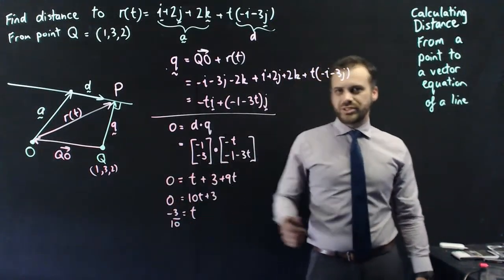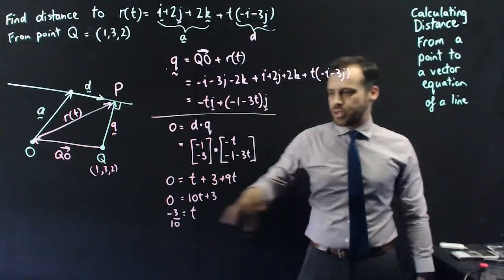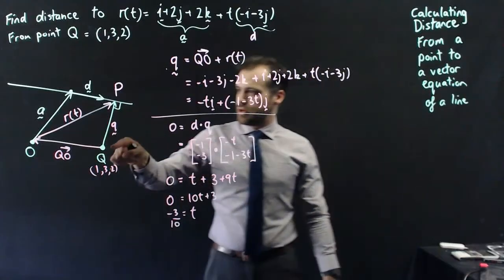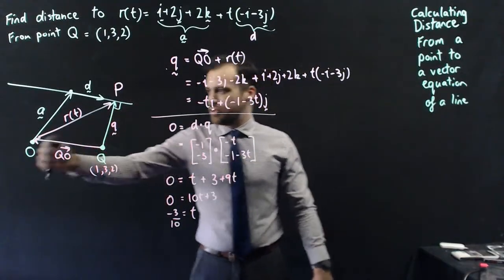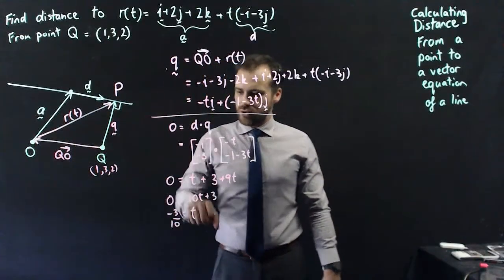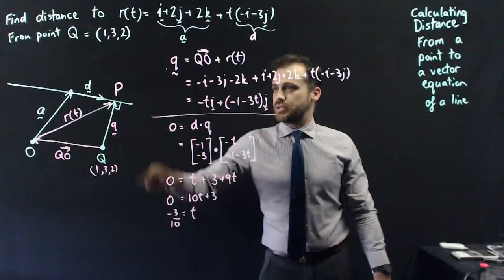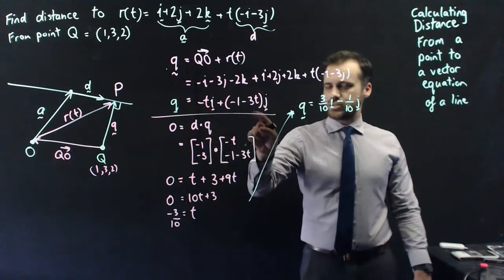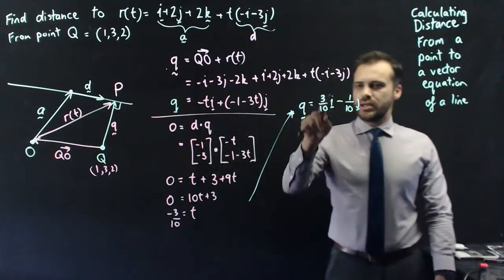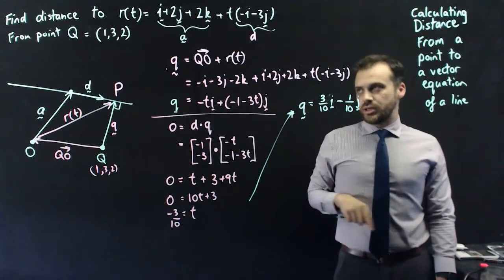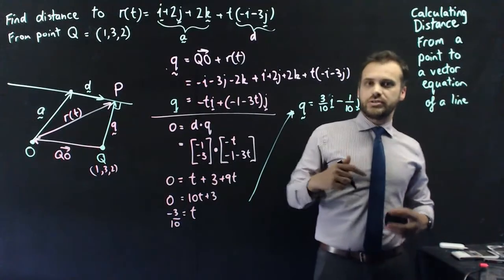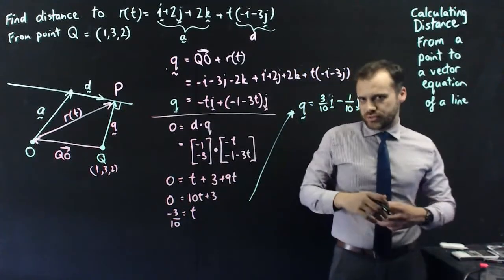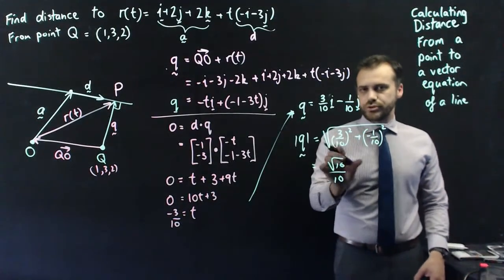t equals negative 3/10. Now you might think to substitute that into r(t), but that would give you r(t), not vector q. To get vector q, you put that t into your equation for q. Putting negative 3/10 into this equation tells you that vector q is (3/10)i minus (1/10)j. The question asked for the distance, so doing the distance formula gives us an answer of √10 / 10.